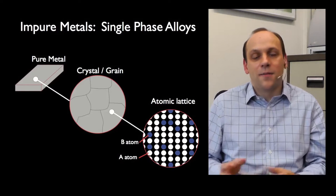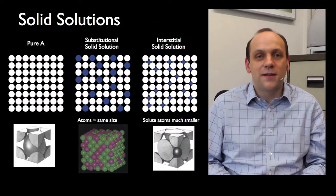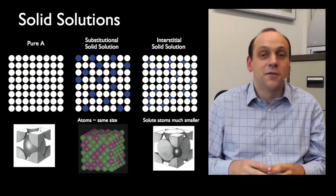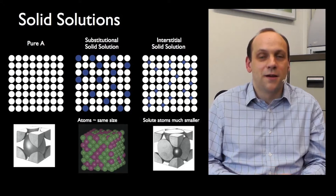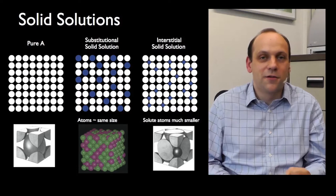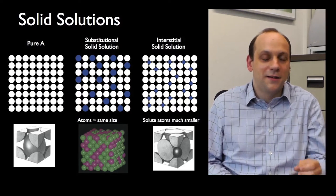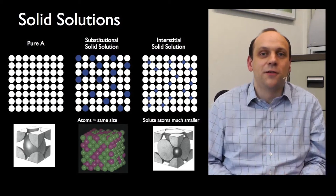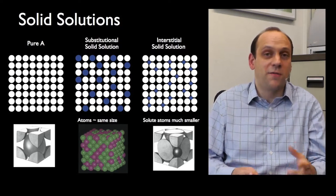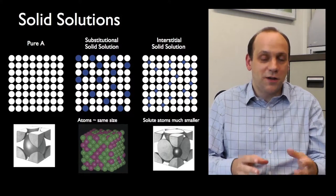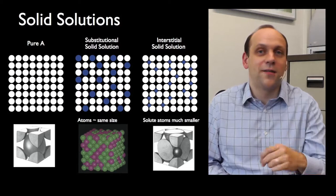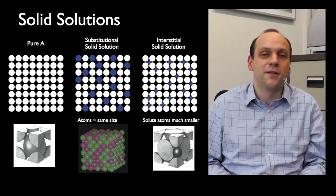When we don't change the phase that's there, it's called a solid solution. Like making a solution in chemistry with water and sugar, we can have a solution of B atoms in A atoms, of magnesium in aluminum. If they're similar sized atoms, those B atoms substitute into the lattice. That's called a substitutional solid solution.